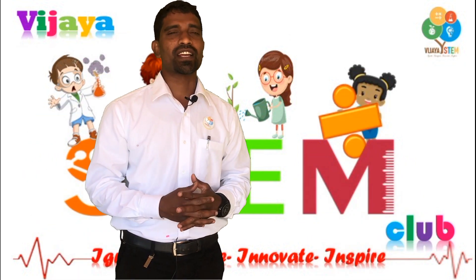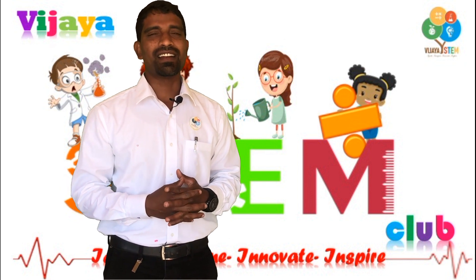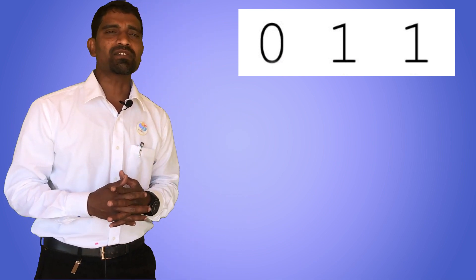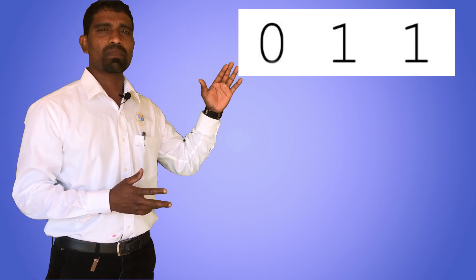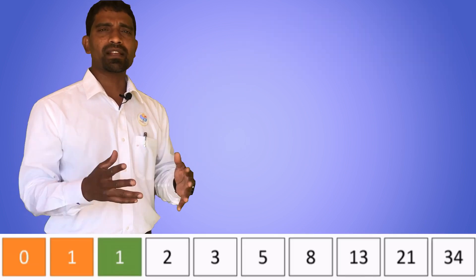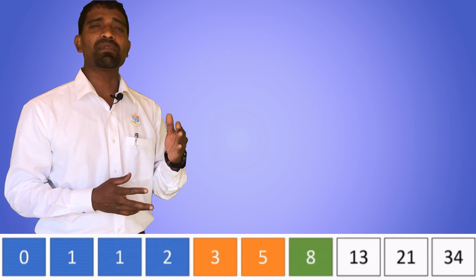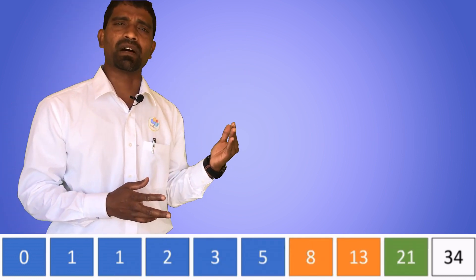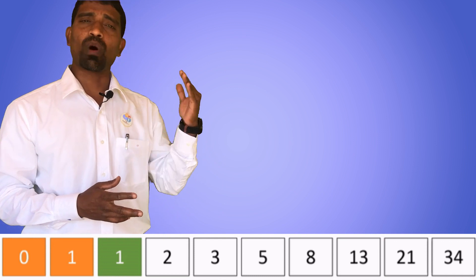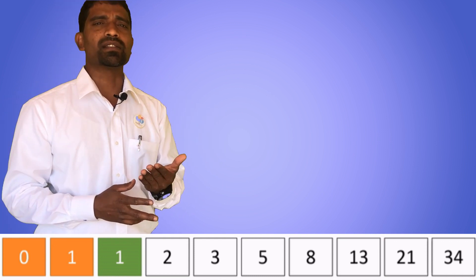What we are going to learn today is going to blow your mind. Let's begin with a simple game. We know the whole number series — it starts with zero. The next number is one. What is zero plus one? It is one. So we have three numbers in the series now, which is zero, one and one. Here is the rule of the game: the new number you are going to get must be added to the previous number. So what is one plus one? It is two.